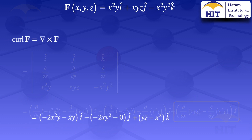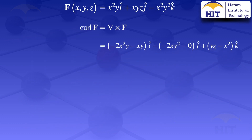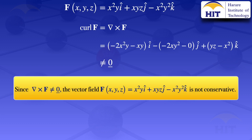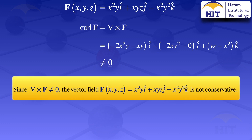The curl of the vector field F is (−2x²y − xy)î − (−2xy²)ĵ + (yz − x²)k̂. The value we obtained is not equal to the zero vector. If the curl is not equal to zero, then the given vector field is not conservative, because we only say a vector field is conservative if its curl is zero. Any questions, you can let me know in the comment section. Thank you.